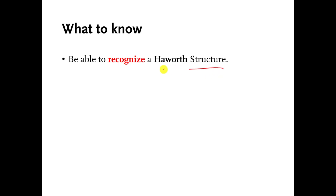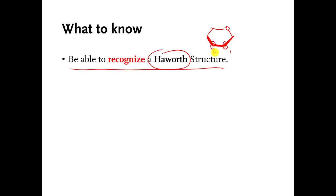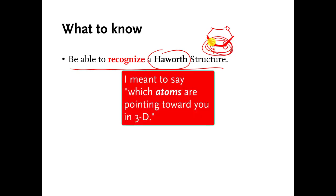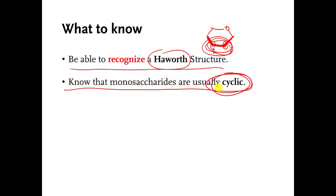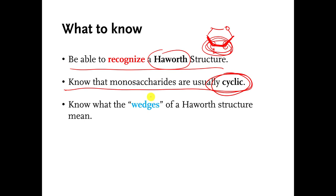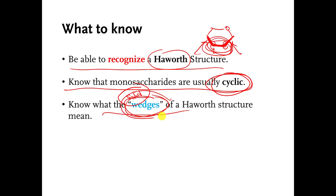You should be able to recognize the Haworth structure — not the name, but if I show you something with the bottom bonds thickened and say this is carbon number one and carbon number two, and ask which bonds are pointing toward you in 3D, you should know it's those thickened ones. You should know that monosaccharides usually make a ring — that's what cyclic means. Those thickened bonds, sometimes called solid wedges, mean those bonds are pointing toward you in 3D.